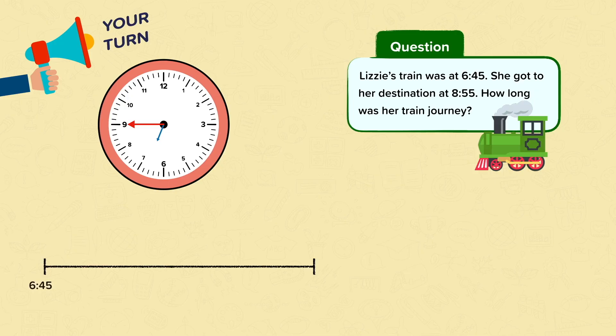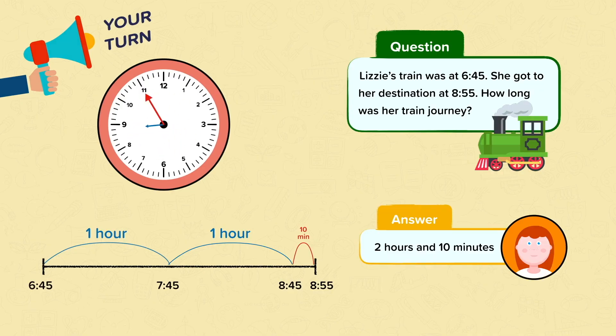Again we need a number line to help us. We start our number line at 6:45, the start time, and end it at 8:55, the end time. We count 1 hour to 7:45, and then another hour to 8:45, and then just another 10 minutes to reach the end time 8:55. We know her train journey was 2 hours and 10 minutes long.